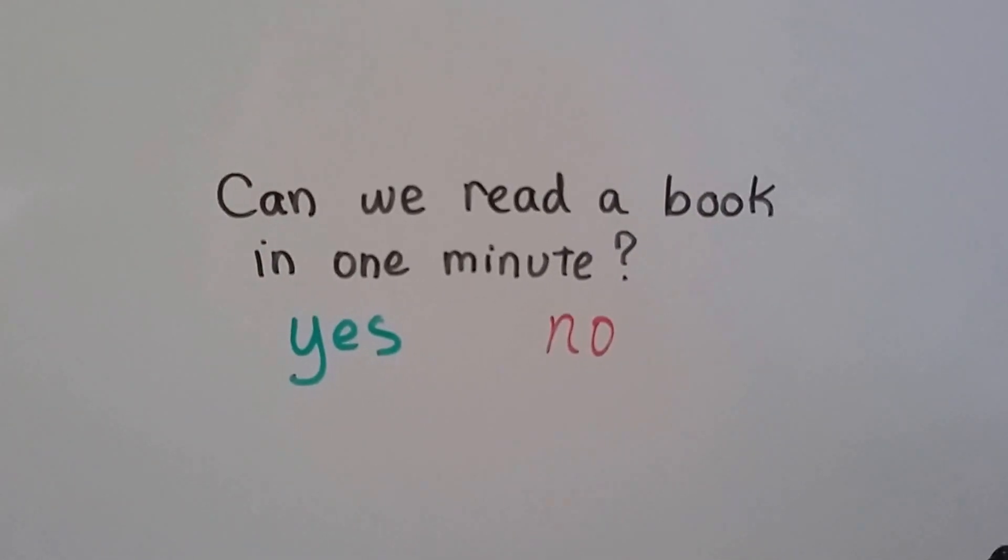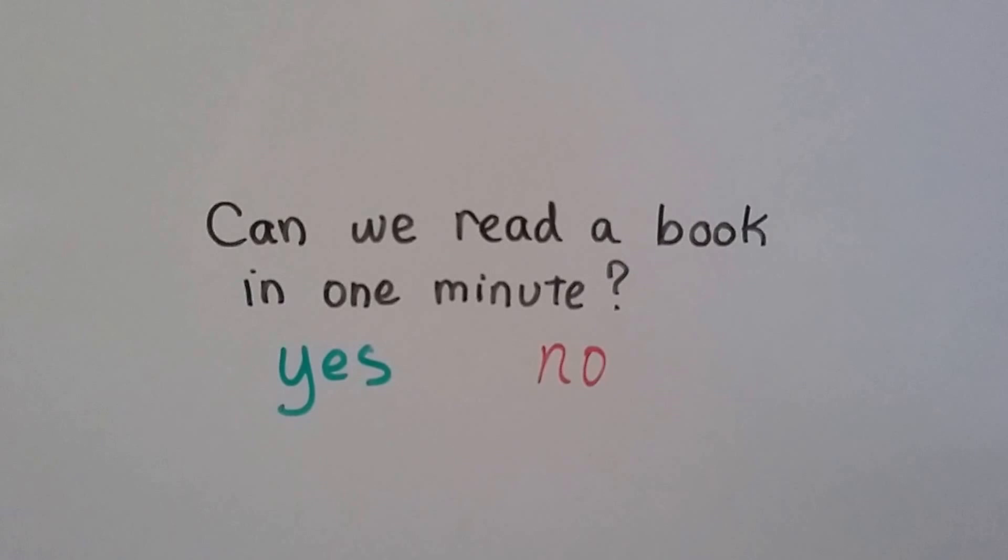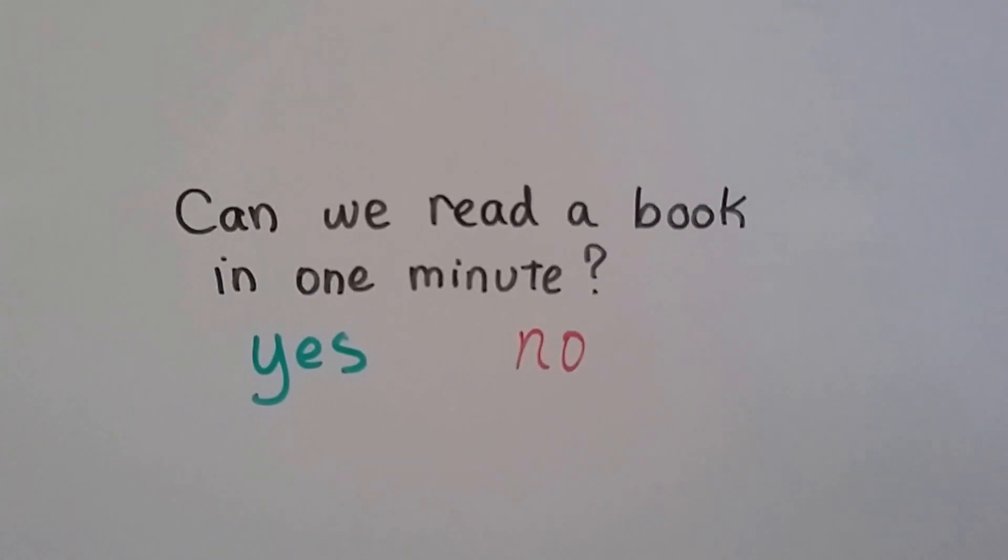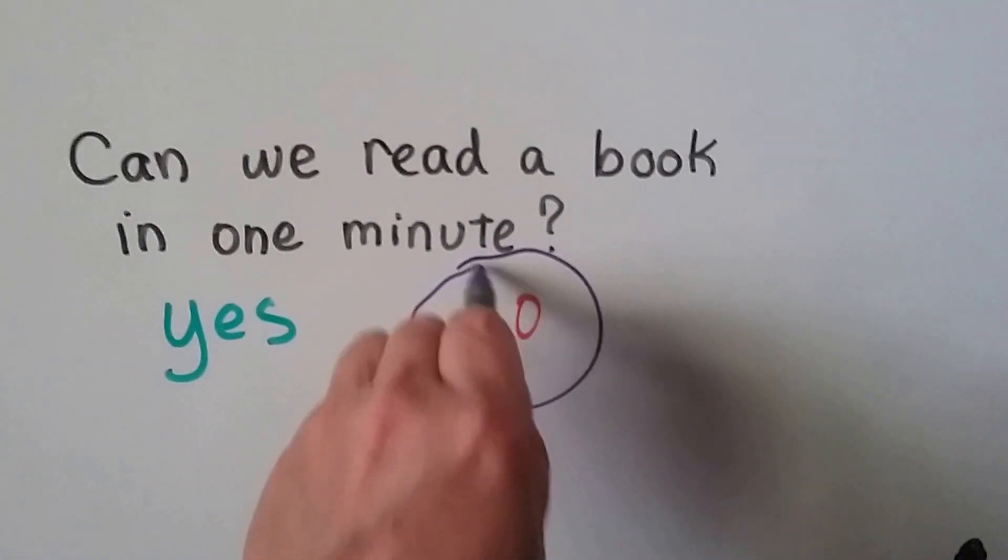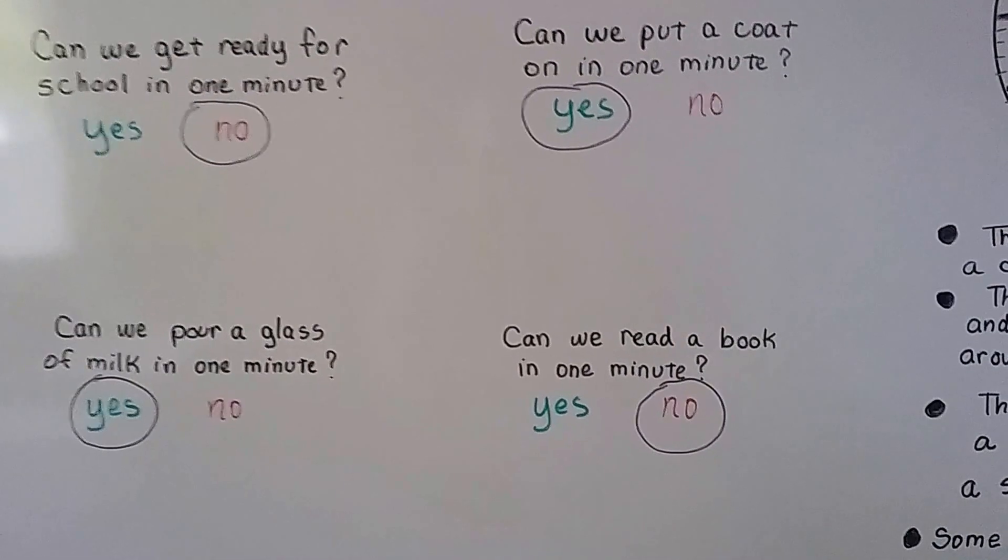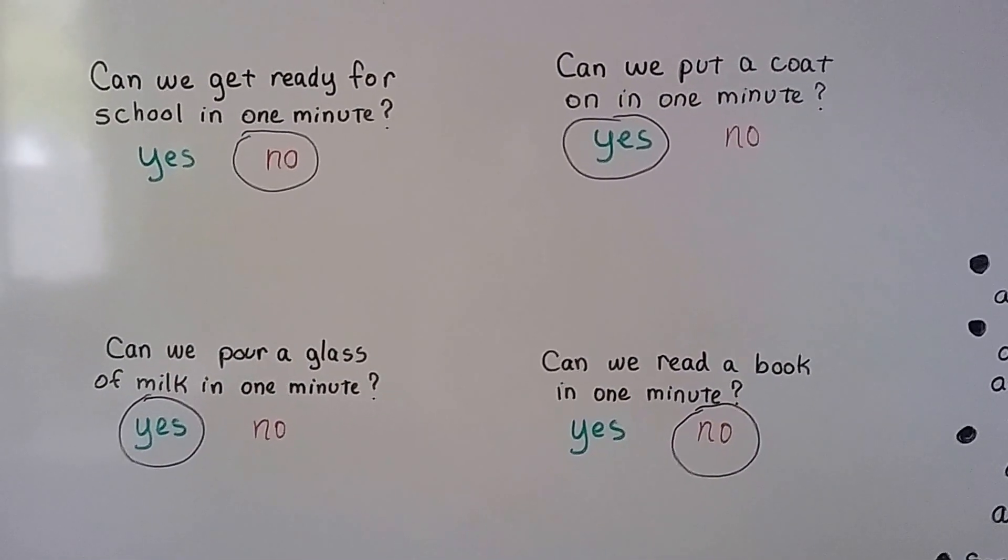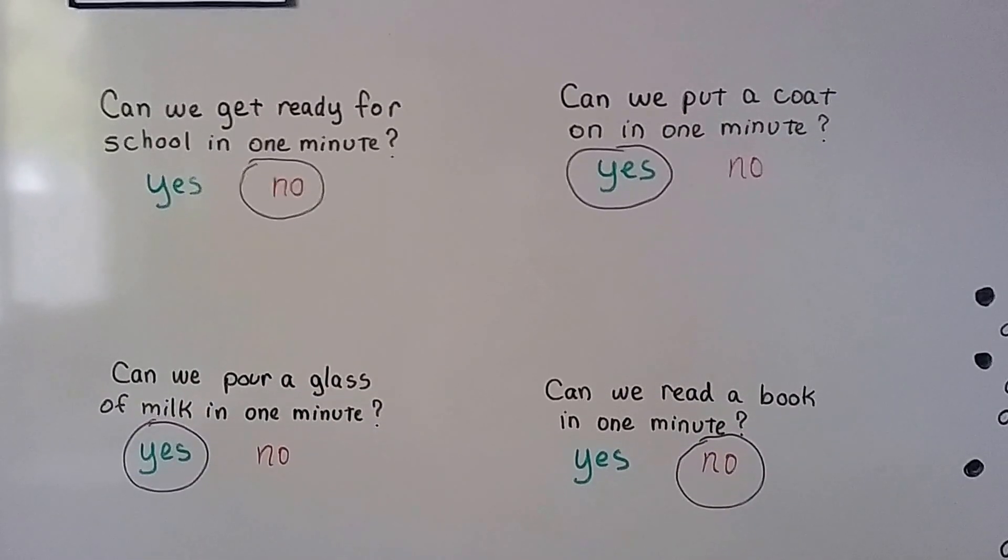What about reading a book in one minute? Could you read a whole book in the time it takes to count to 60? No, it takes a little bit longer to read a book, doesn't it? So that would be a no. So a minute is about the time that it takes to count to 60. And there's some things we can do, and some things we can't because we need more time.